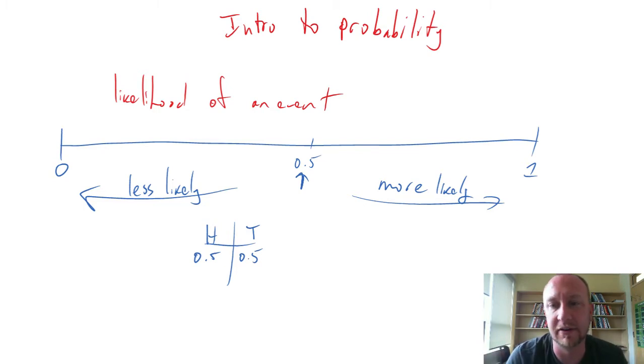We can go a little bit further and roll a dice. If we roll a dice, we have six outcomes: one, two, three, four, five, six. What's the probability of any one of these coming up? What's the probability of rolling a three?